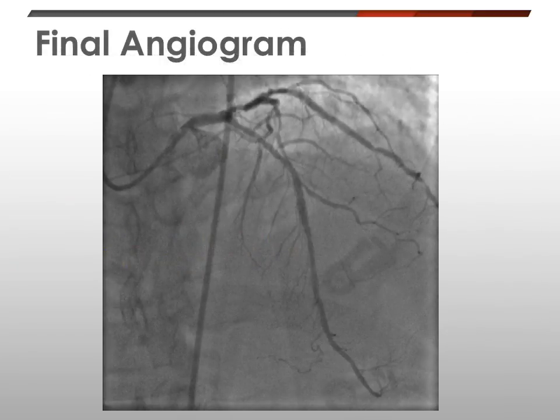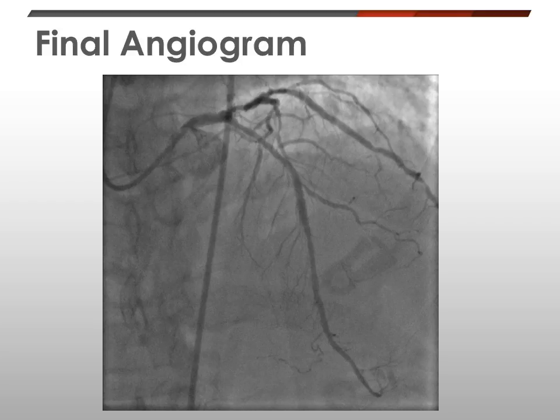The final angiogram after giving intracoronary adenosine shows that the stent is well deployed in the LAD and the diagonal branch is well preserved. There is some diffuse disease in the distal LAD, but the final FFR in the distal LAD was non-ischemic at 0.89.